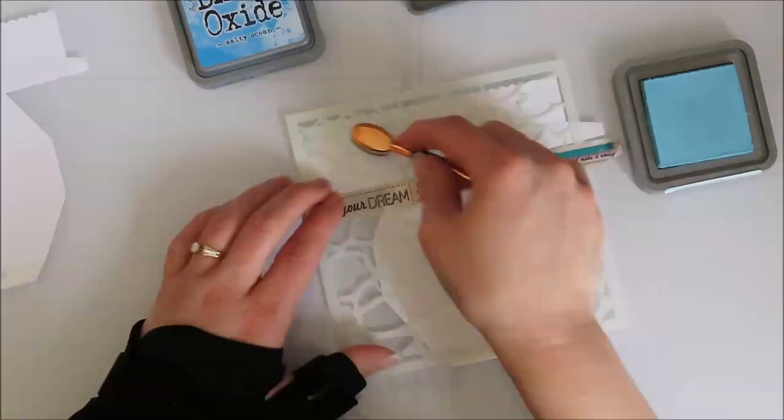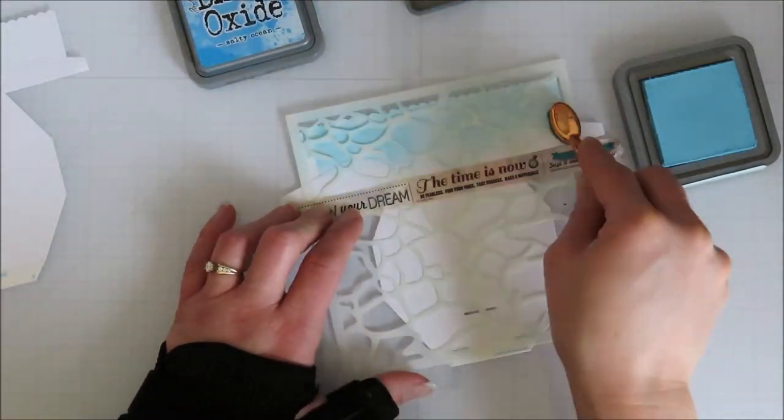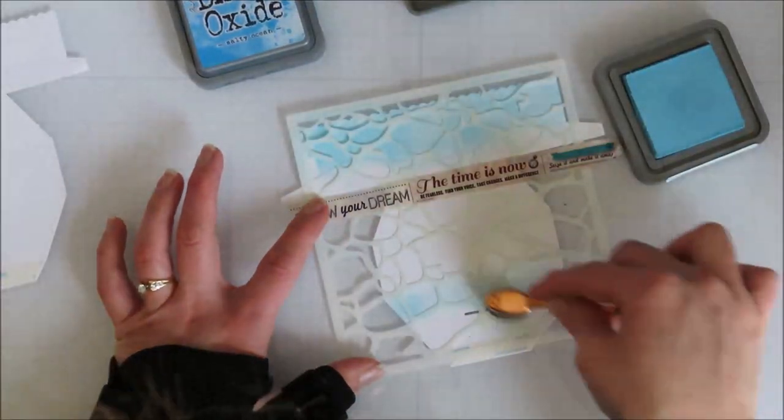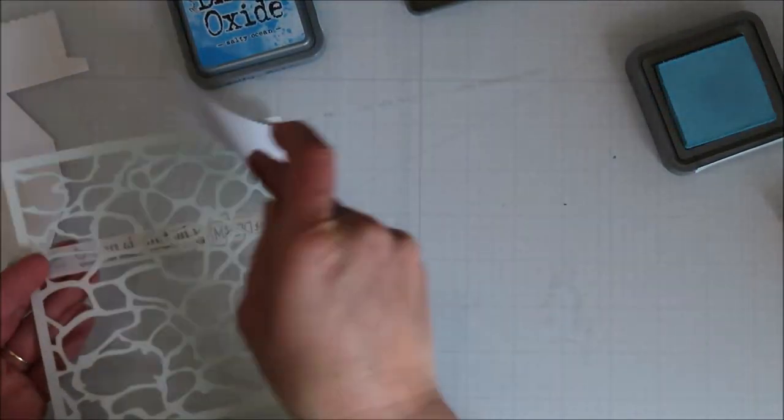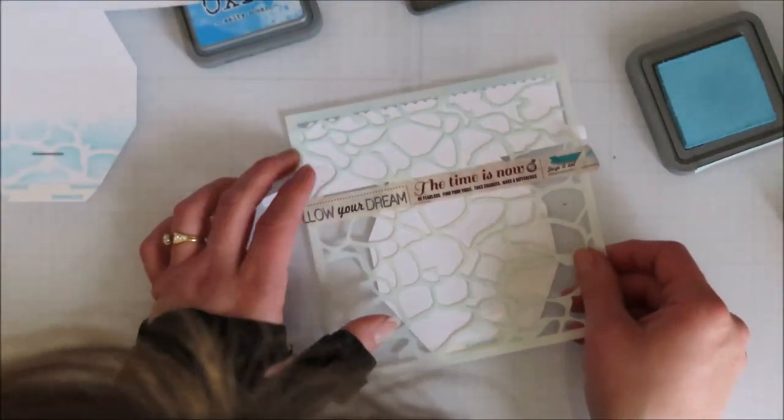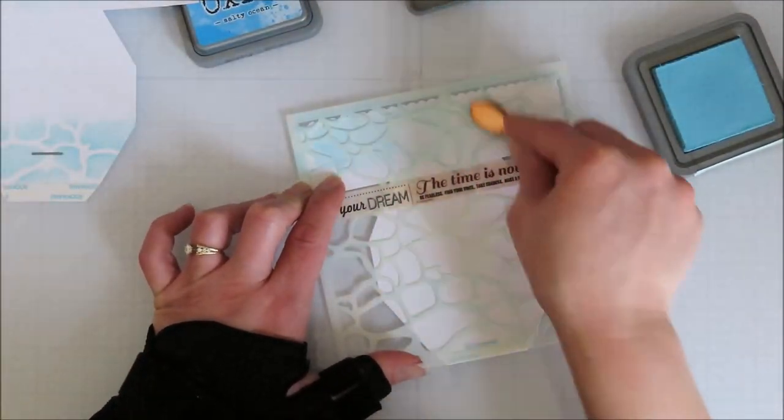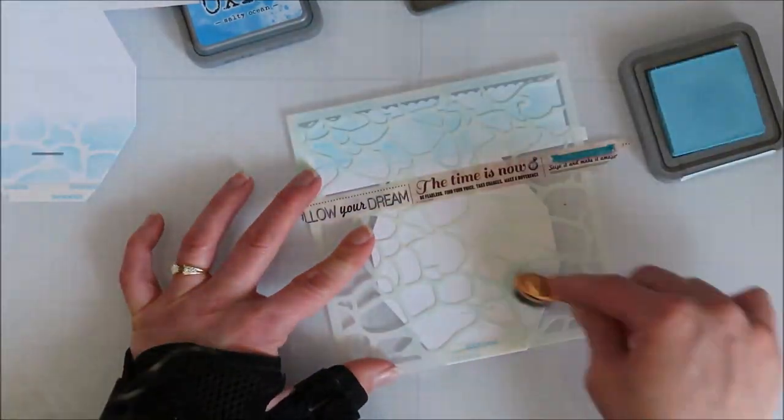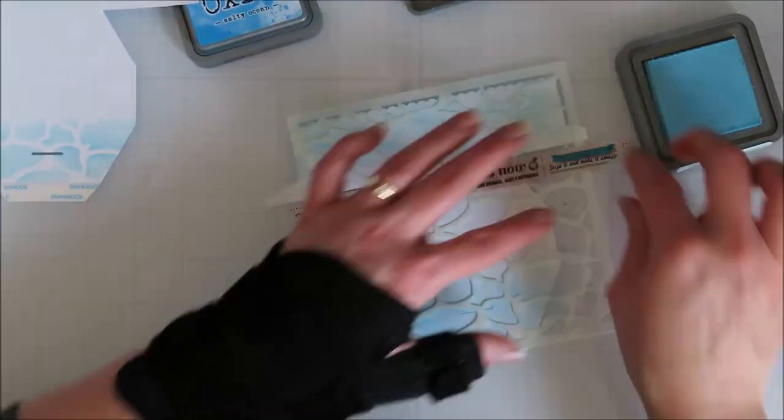So I am starting with my two base pieces for my platform pop-up, and I am using a MFT pool stencil. It makes it look like water. I just go in with one layer, and then I'm going to rotate my stencil and do a second layer and maybe a third layer with the tumbled glass ink.